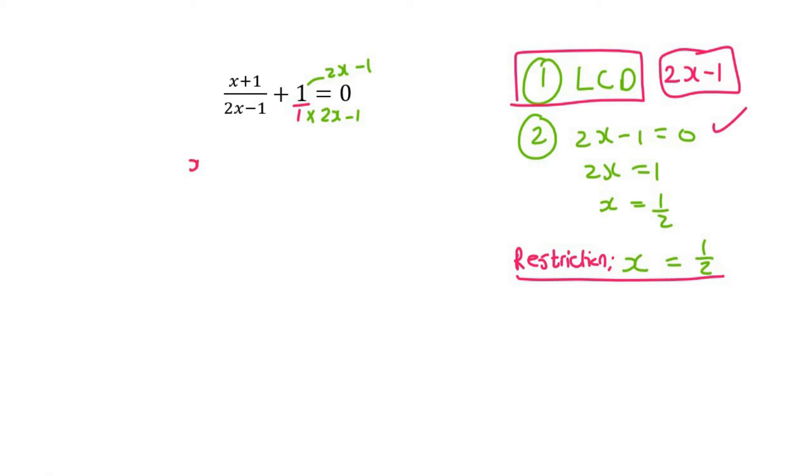And so that's going to give us x plus 1 over 2x minus 1 plus 2x minus 1 over 2x minus 1 equals zero. When you have an equation, and the denominators are all the same, you can cancel them out.